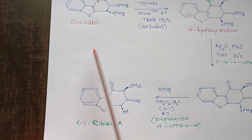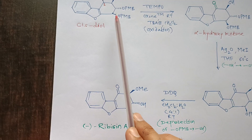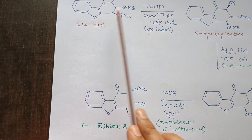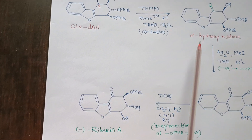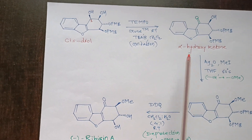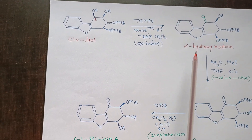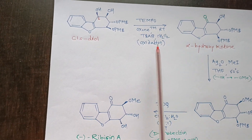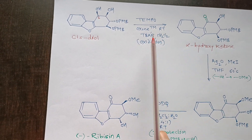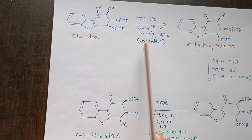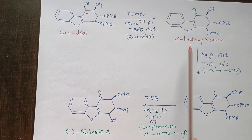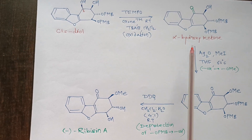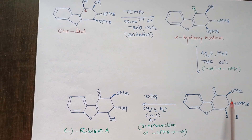Chemoselective oxidation of the OH group at C1 carbon into an alpha-hydroxy ketone was achieved using Oxone as an oxidizing reagent in the presence of TEMPO and TBAP.